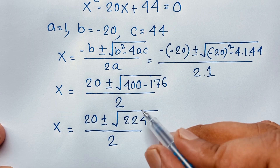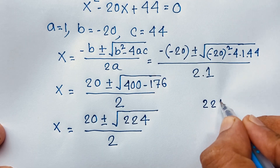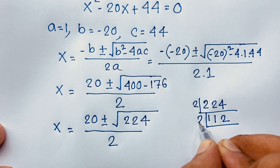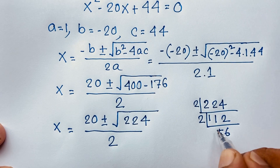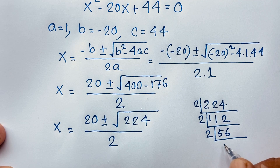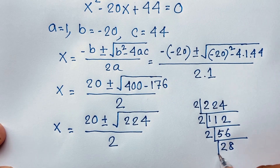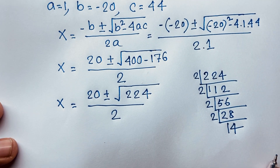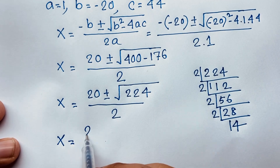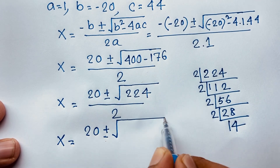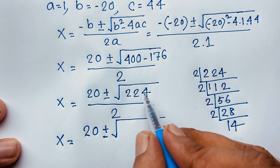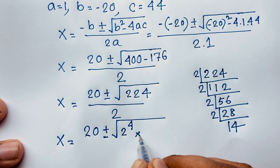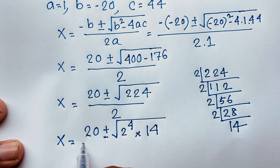Now we simplify the square root of 224. Dividing 224 by 2 gives 112, divided by 2 gives 56, divided by 2 gives 28, divided by 2 gives 14. So 224 equals 2 to the power 4 times 14. Therefore x equals 20 plus or minus square root of 2 to the power 4 times 14, over 2.